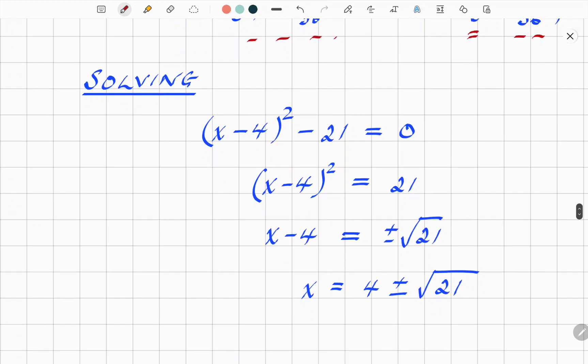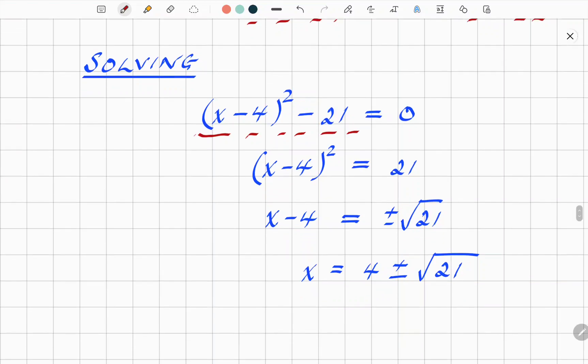Now, the final thing that you want for this is how to use the completed square form to actually solve a quadratic. I'll give one simple example, sticking with the one that we've already used. So once you've got it in the completed square form, it's just a question of rearranging. So putting 21 on the other side, you've got (x - 4)² equals 21.